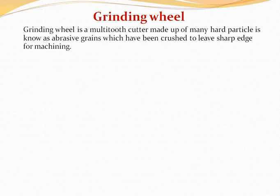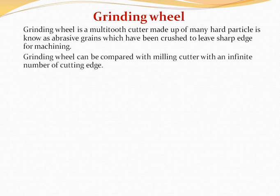Grinding wheel किसी भी surface को grind करने के काम आता है। इसका मतलब यह है कि यह बहुत ही कम material को remove करता है और surface finishing करने का काम करता है। Grinding wheel can be compared with a milling cutter with an infinite number of cutting edges. जिस तरह milling cutter के ऊपर कई सारे teeth होते हैं, इसी तरह grinding wheel के ऊपर भी कई सारे abrasive grains होते हैं, जो बहुत ही छोटे तीखे particles होते हैं।